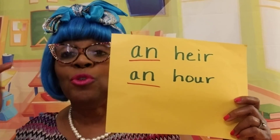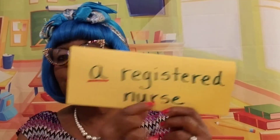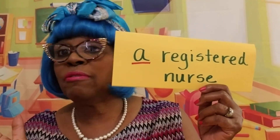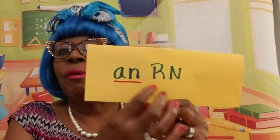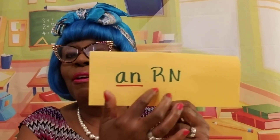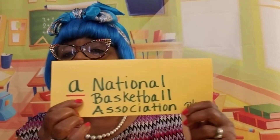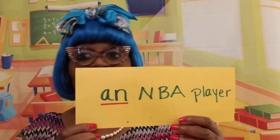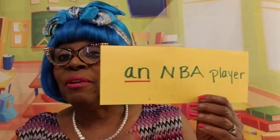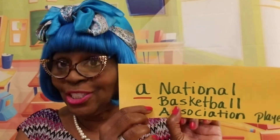Stick with the sound and you will get it right all the time. What about a registered nurse? You hear the R, so you know you're correct — it's a consonant sound, a registered nurse. But if you abbreviate the word to RN, you hear a vowel sound, so it becomes an RN. What about a National Basketball Association player? A national — that's a consonant. But if you abbreviate that to NBA player, then it now becomes an NBA player, because you hear the vowel sound. Focus on the initial sound and not the initial letter.